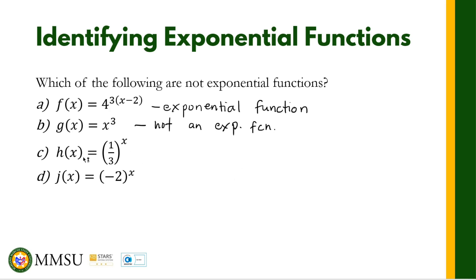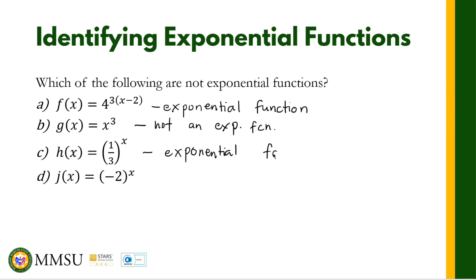For letter C, h(x) = (1/3)^x. Our base is one-third, which is a positive real number — that's fine. And we have the independent variable x in the exponent. So this is an exponential function.